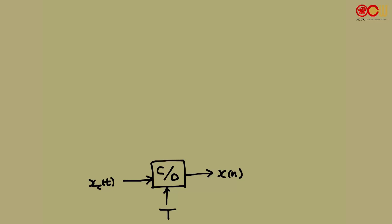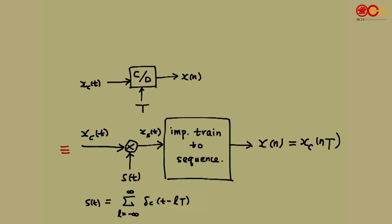Earlier, we talked about a C2D converter that samples a continuous time signal XCT using sampling period T. Conceptually, a C2D converter can be understood as the interconnection of two parts. For the first part, the continuous time signal is multiplied by an impulse train represented by ST. Then the resulting XST is passed through a block that converts an impulse train to a discrete time sequence.